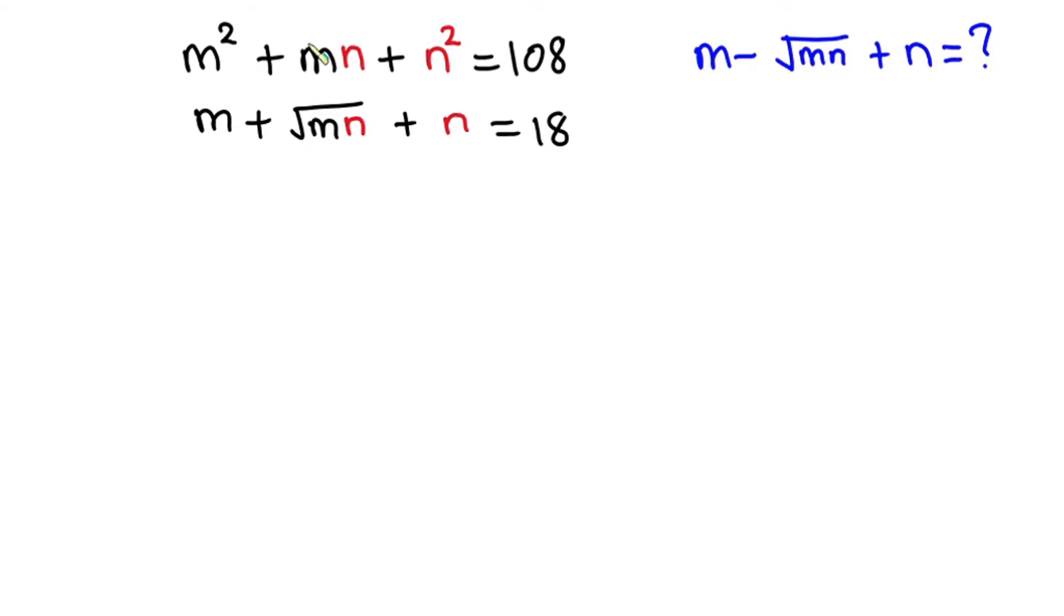Now let's get started. First of all, our main concentration is going to be on this first equation. From this equation we have m squared, then instead of writing mn I'll write 2mn, then plus n squared.